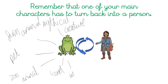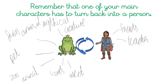You could pick an insect. And for the person the character changes back into, we could have a prince, one of our friends, a teacher, a famous person, or just an adult we know.